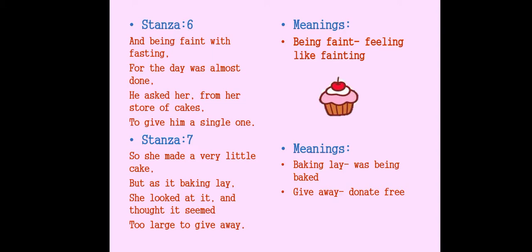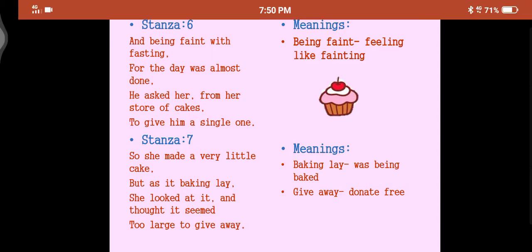Stanza 7: 'So she made a very little cake, but as it baking lay, she looked at it and thought it seemed too large to give away.' The woman was selfish and greedy. Instead of giving a cake from her store, she started making a very small cake for St. Peter because she did not want to share her things. But when she put the cake in for baking, she looked at it and thought it was too big to give to someone.